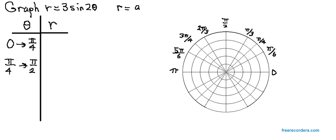whenever your equation is the form r equals a sine n theta or r equals a cosine of n theta, you will get a rose curve.